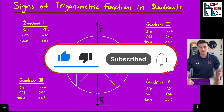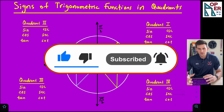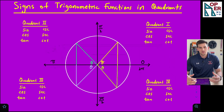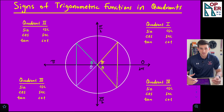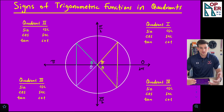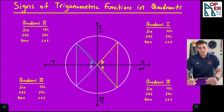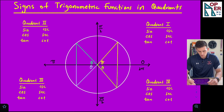I did a previous video on how to find the different trig functions given a sine value and given the fact that the theta angle was in quadrant three. So I got to thinking: what about quadrants one, two, and four? Let's make a video and talk about all four quadrants and what the signs of each function should be in each of those four quadrants.